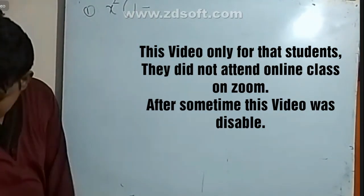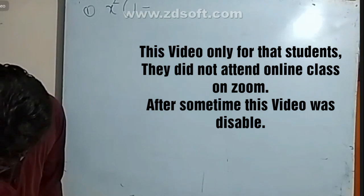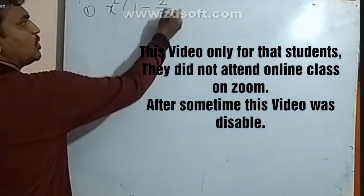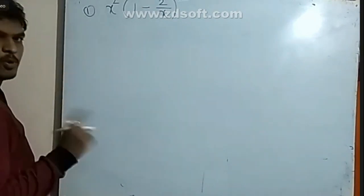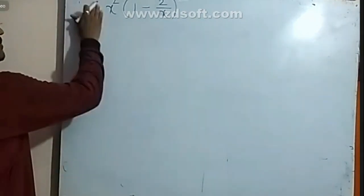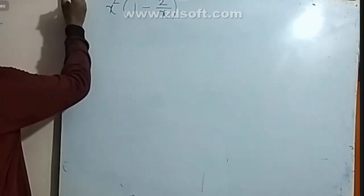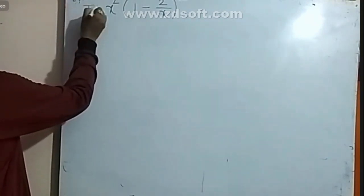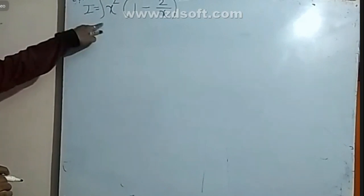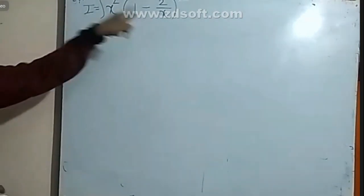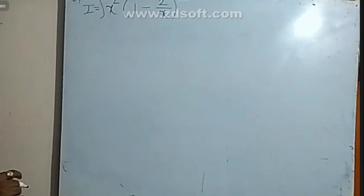1 minus 2 by x star 1 square. Let's write — this is a boiler problem. If you want to solve the problem, the solution is to make i equal to integration. Now we will solve the problem.